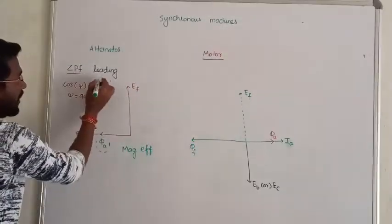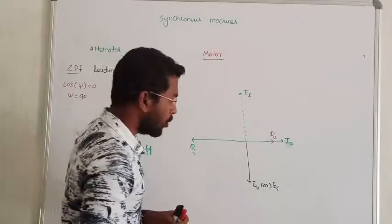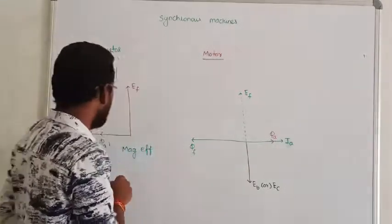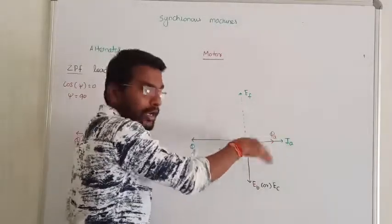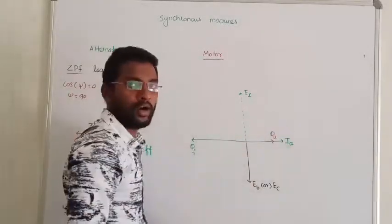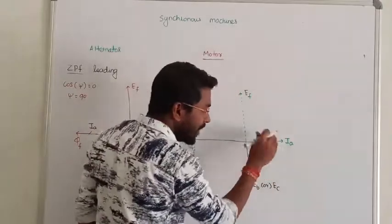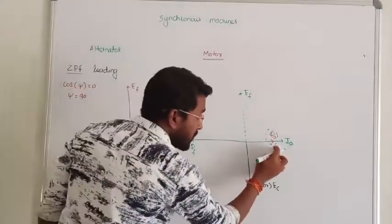I know, pass you to know zero power factor leading. Leading, I know voltage here, 90 degree. The armature current lead out. So lagging in the alternator, leading in the motor. Armature current, armature flux on the right.